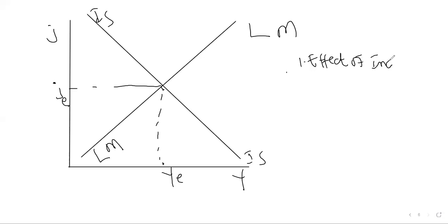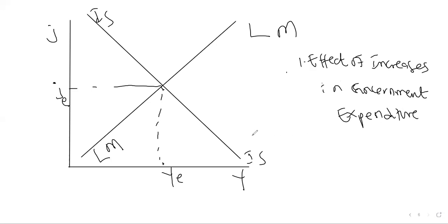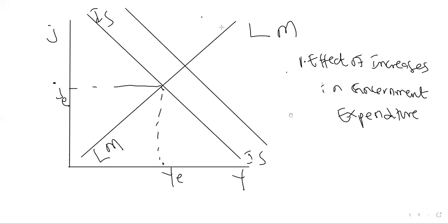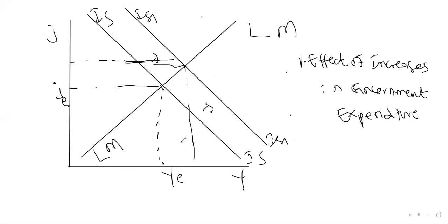Let's look at number one: effects of increases in government expenditure. If government expenditure increases, the IS curve is going to shift to the right — and in the other lesson I taught you why the IS curve will shift due to fiscal policy. Let me name this IS1. It will shift this way to IS1. We can see that interest rates will rise and income will rise.